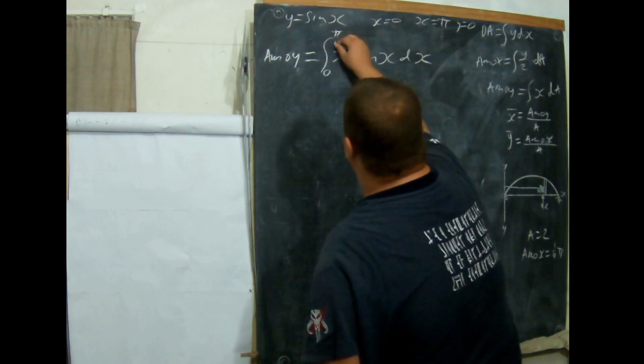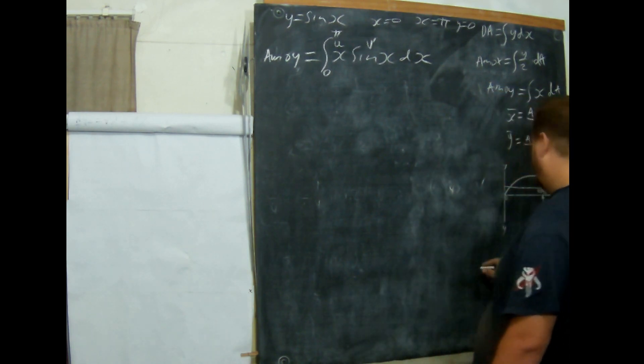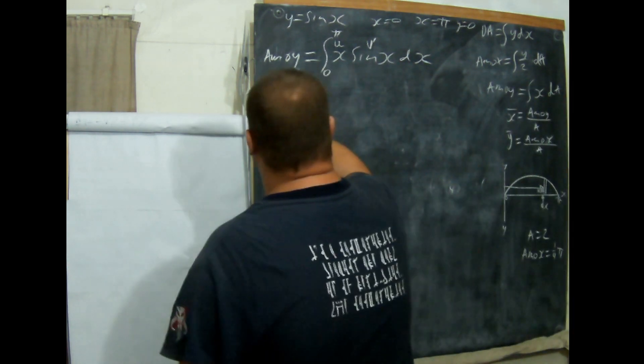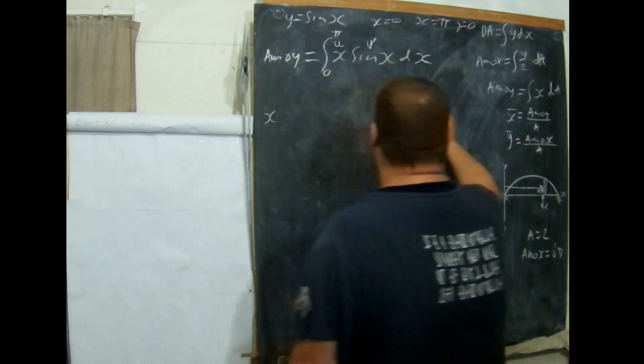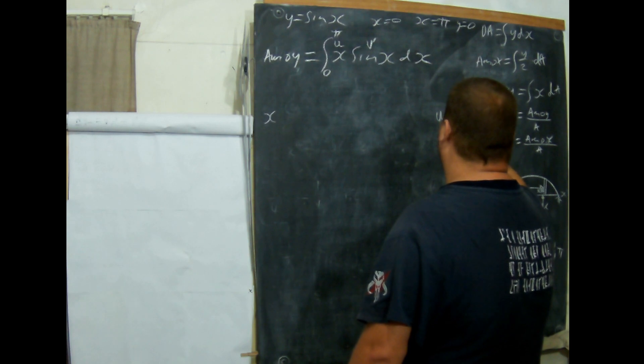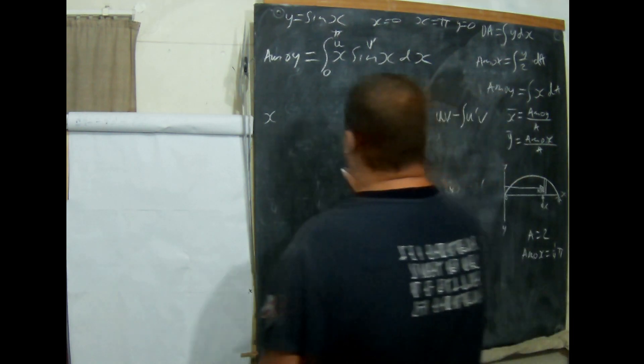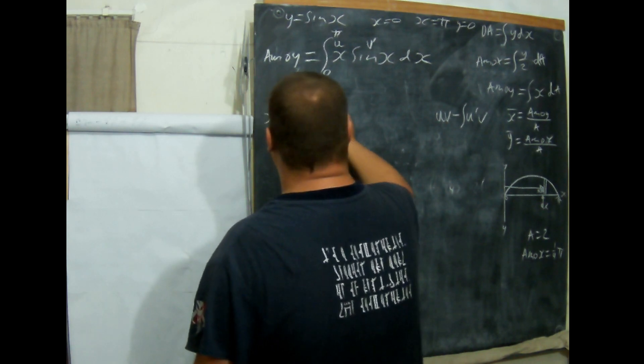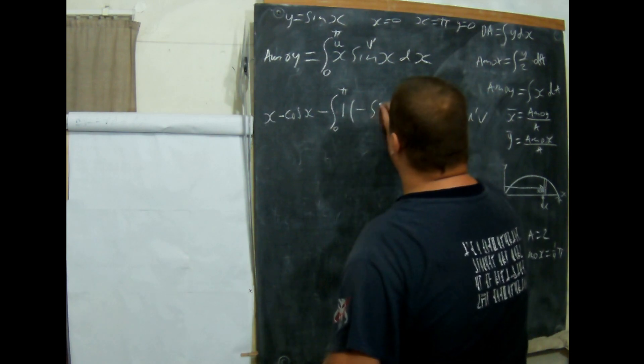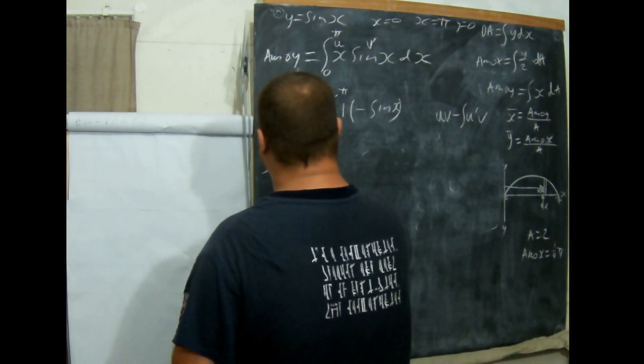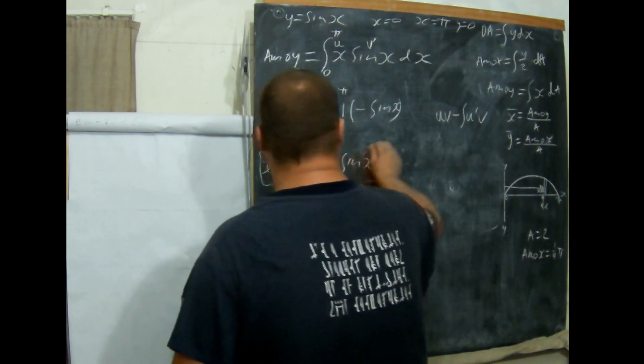This is U and that's V prime. We're going to say U, which is X, V. If I remember my formula correctly, that is U V minus integral of U prime V. I've got to take the integral of sine X, which is minus cos. So minus cos X minus the integral of 1 times minus, so that becomes sine. We've got X minus cos X plus sine X.